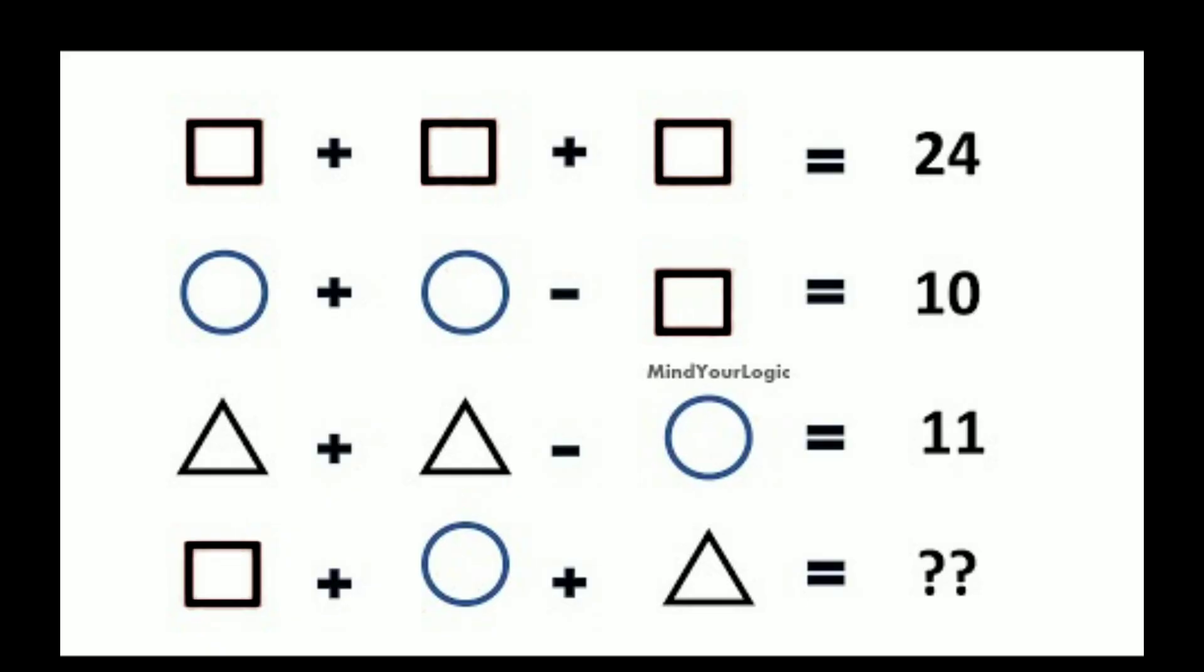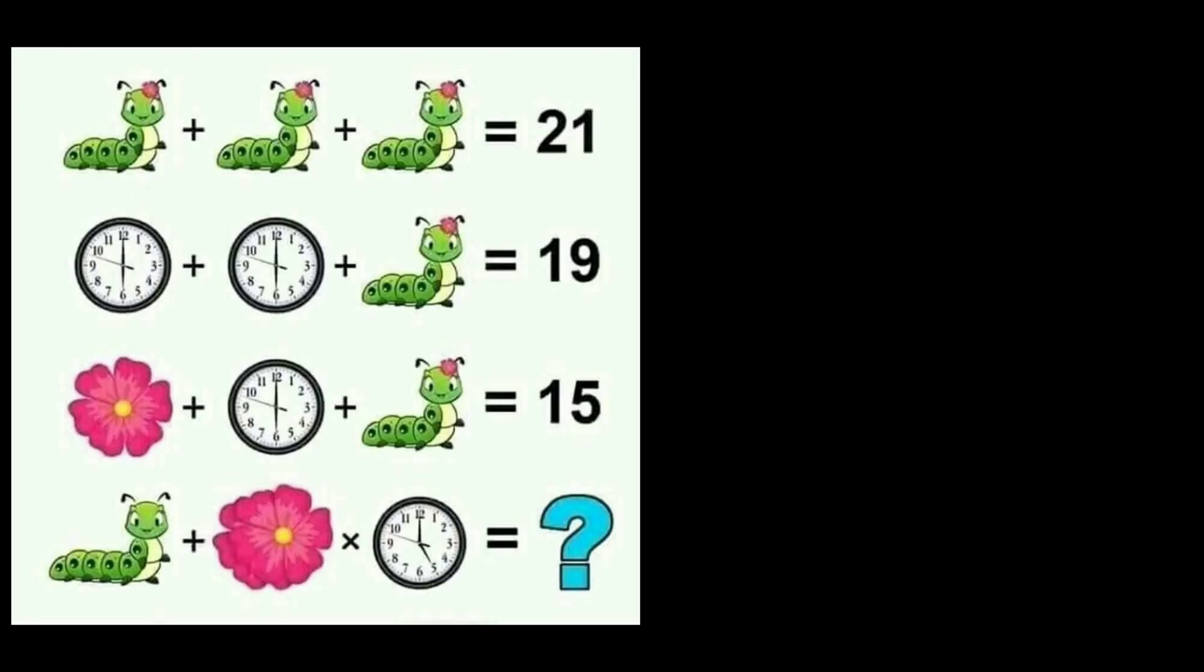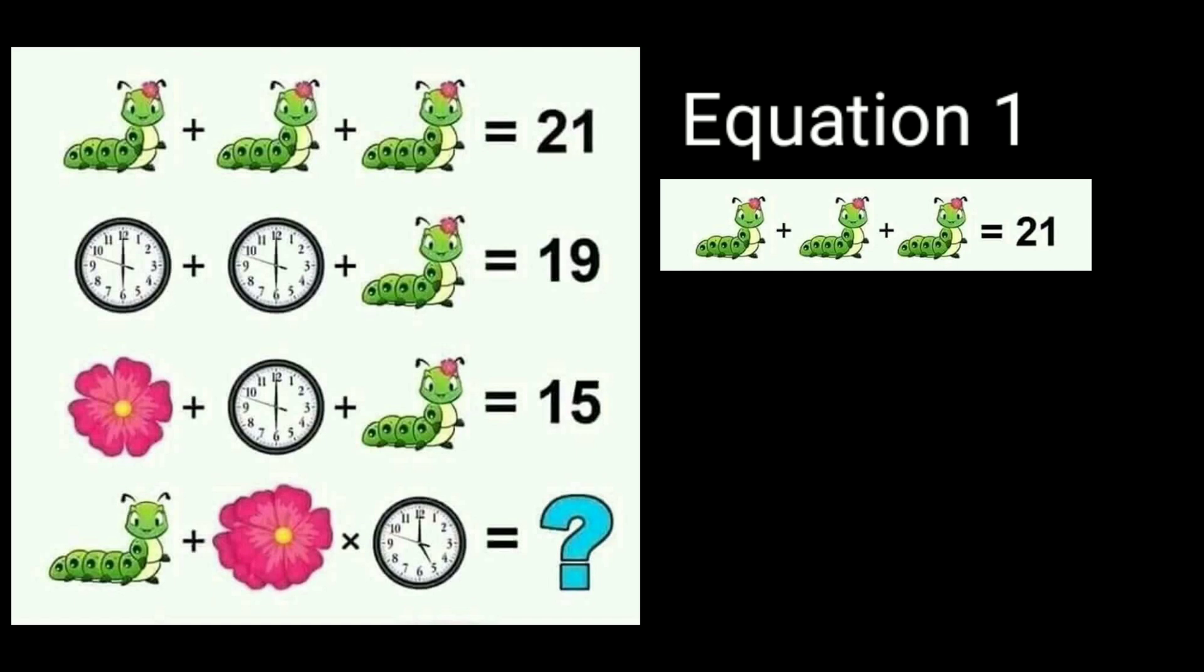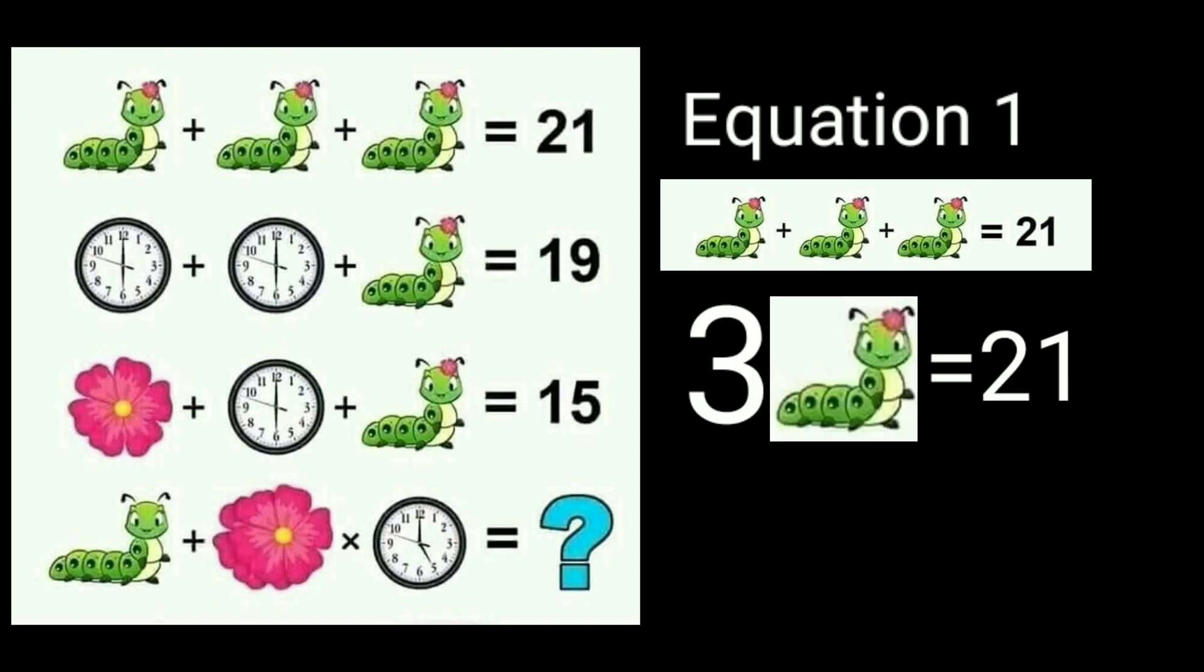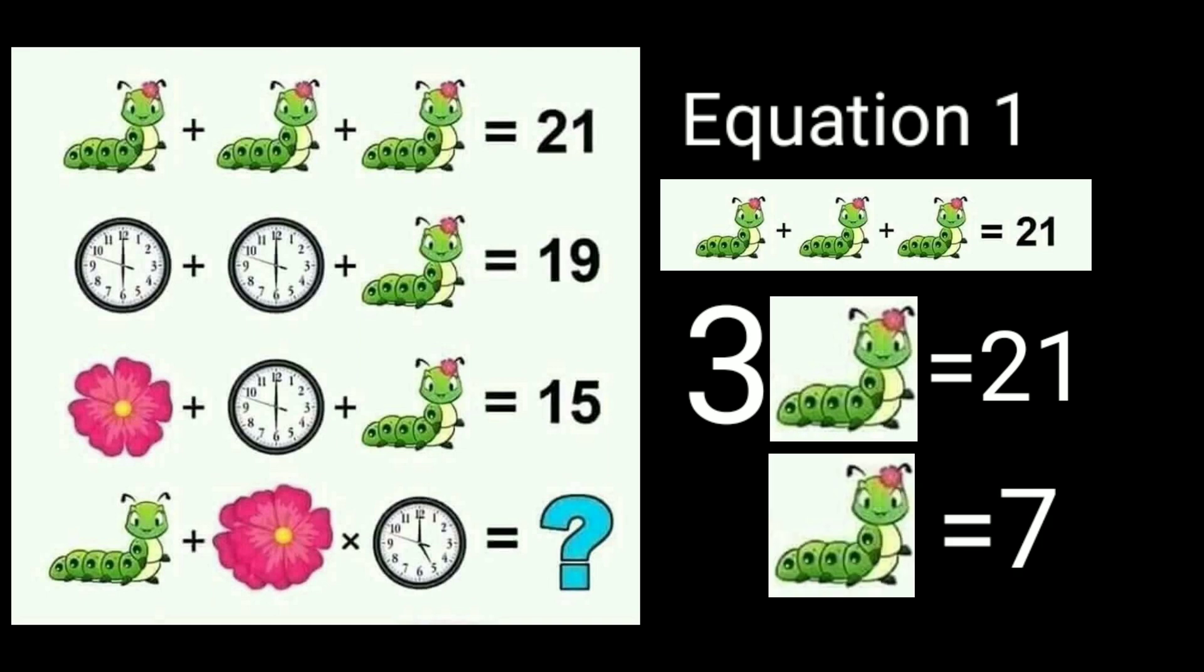Okay, now it's answer time. Let's start. Now, 3 caterpillars are there and they have flowers on their head. So 3 caterpillars equal 21, which means the value of 1 caterpillar is equal to 7.